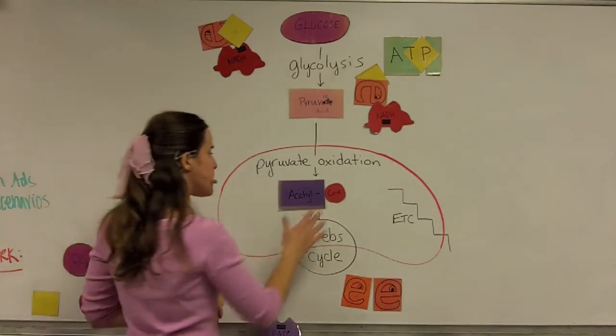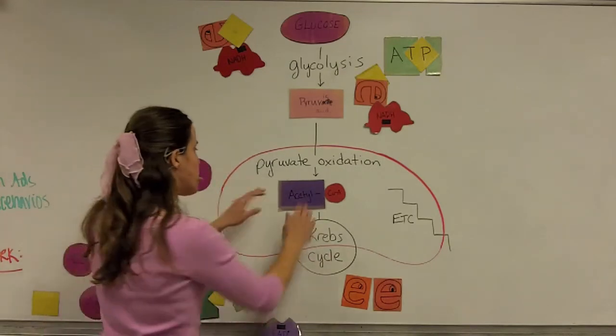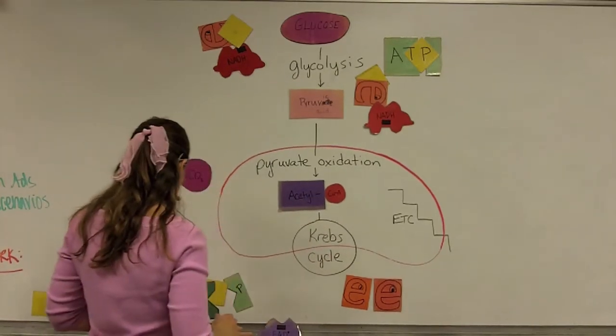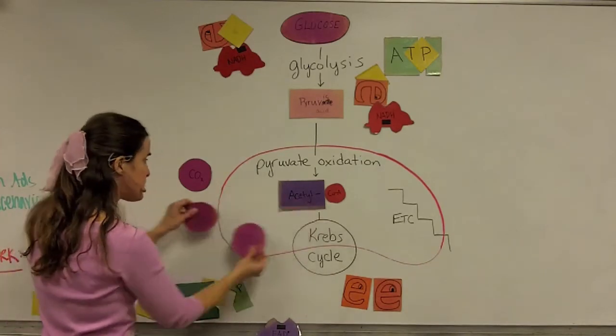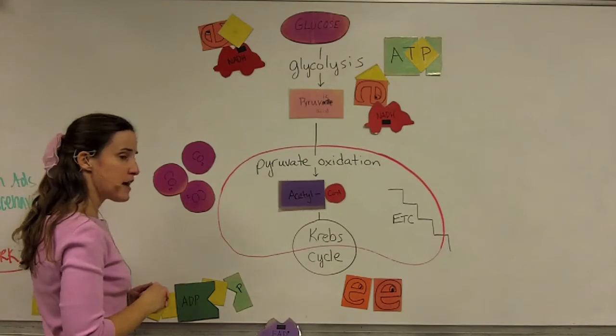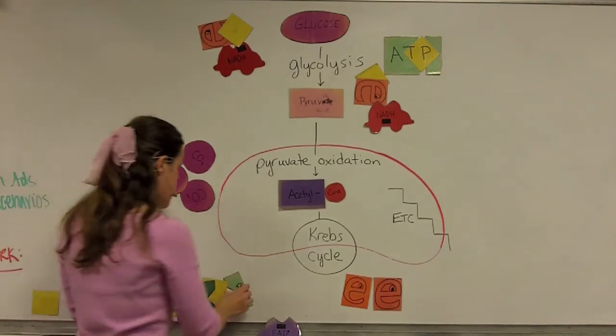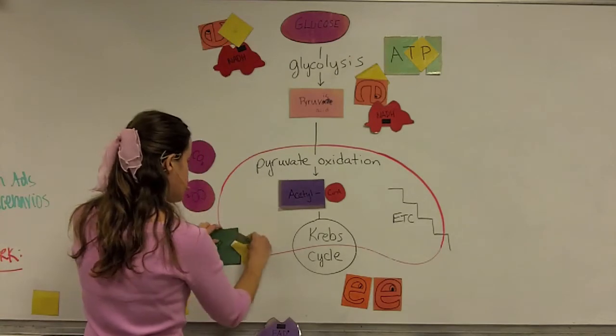Acetyl coenzyme A enters the Krebs cycle, where it's further broken down. The two carbons that were remaining in this molecule are released as molecules of carbon dioxide. A lot of energy is released in this process. Some of it is used to make ATP,